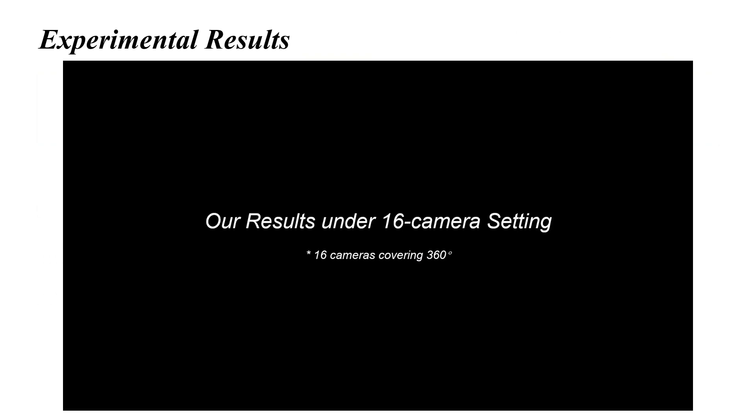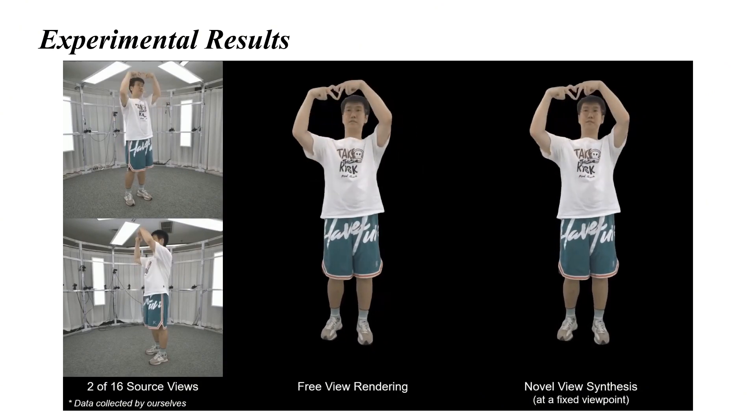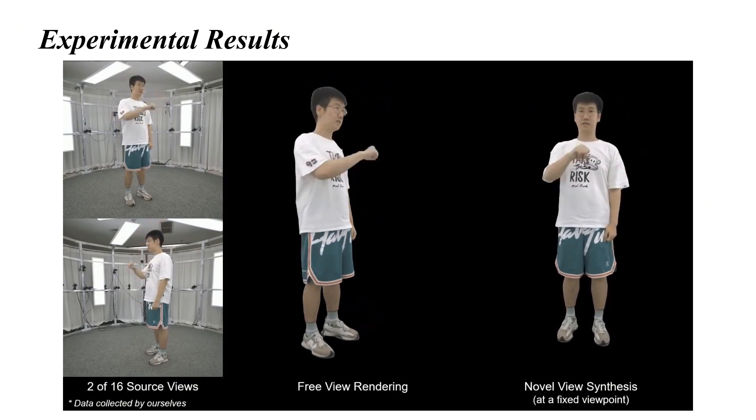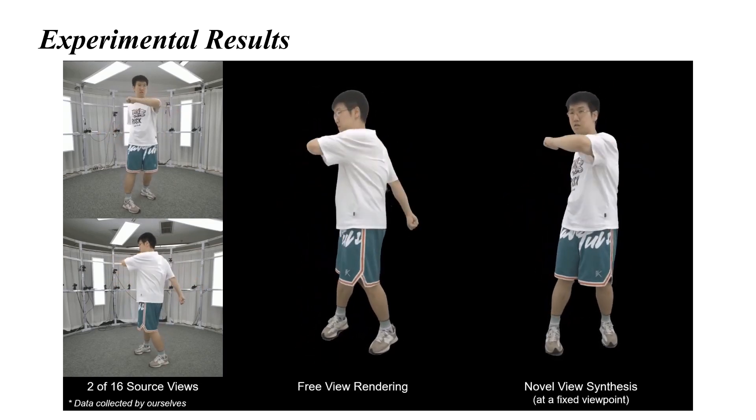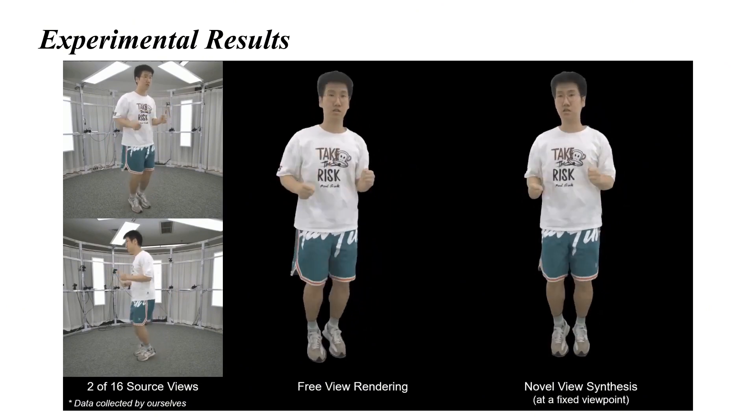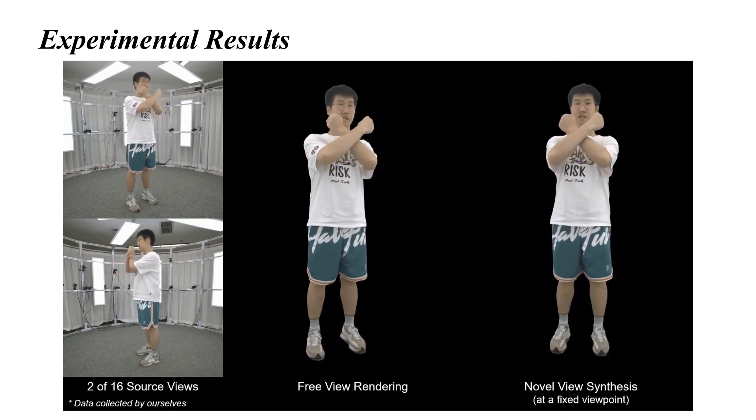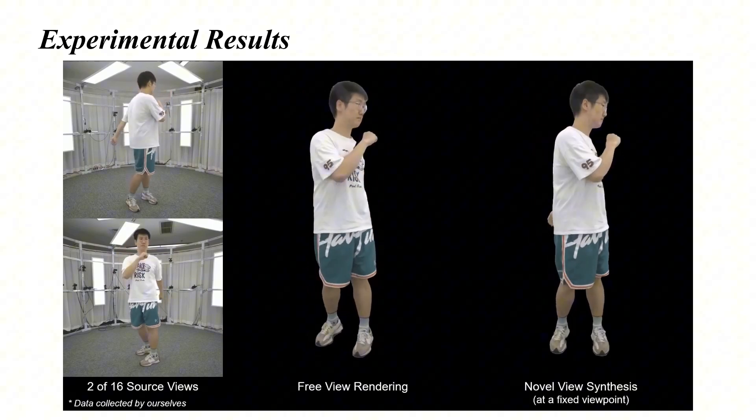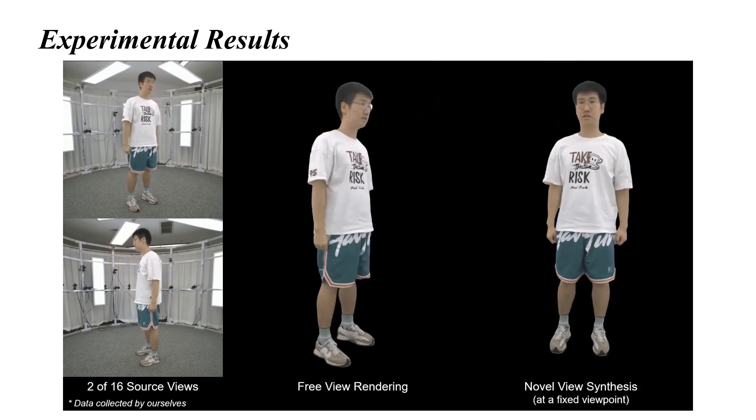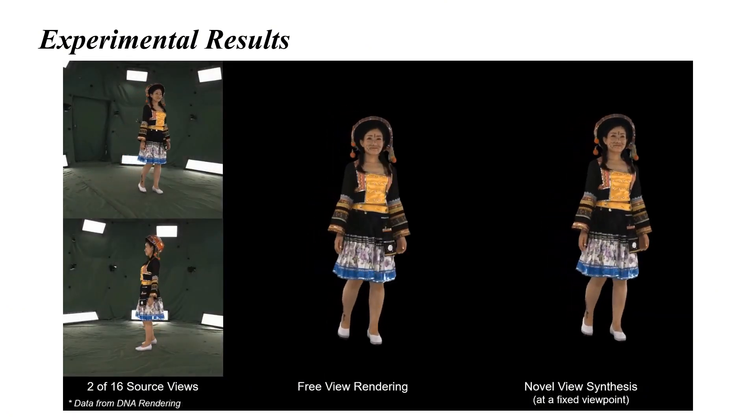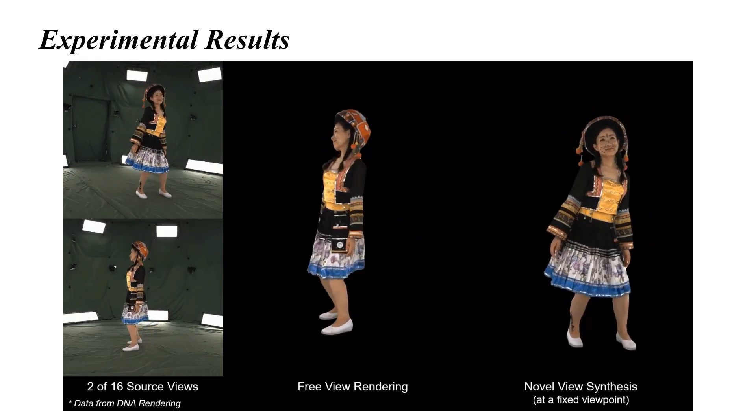Here are the results under 16 camera setup. From left to right are two example source views, free viewpoint rendering and the novel view synthesis at a fixed novel viewpoint. Although trained on synthetic data, GPS Gaussian can generalize well to real captured data. As shown in this case, our method performs robustly against complicated body motions and fast movements. Here is another result on DNA rendering dataset. Facial makeup and garment patterns are clearly discernible.